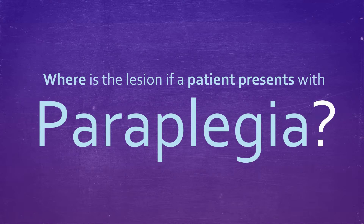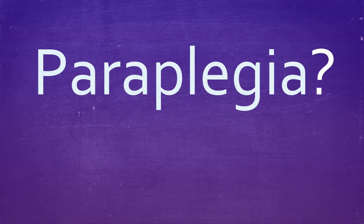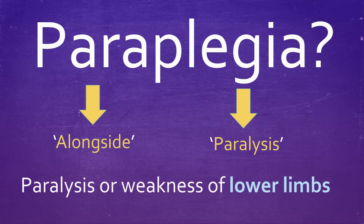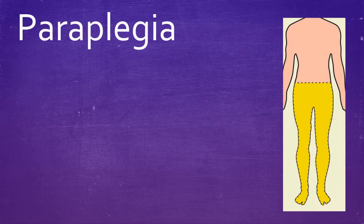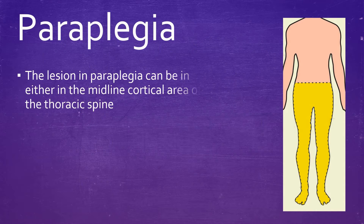The question we are asking ourselves this time is: where is the lesion if a patient presents with paraplegia? Let's begin by defining paraplegia. This is essentially paralysis or weakness of the lower limbs — the legs essentially. Now if a patient presents with paraplegia, the lesion can be in one of two places.